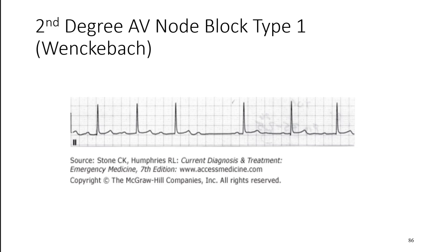When we start moving to second degree is when we start seeing dropouts — a loss of a QRS complex somewhere. A general rule of thumb: if you see two or more P waves before a QRS complex on any ECG, you can think second-degree AV node block, and then determine what type.